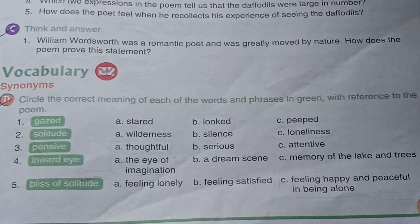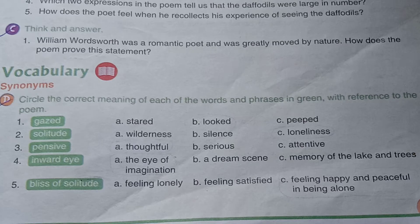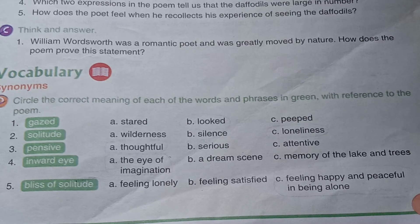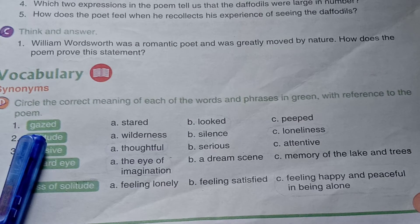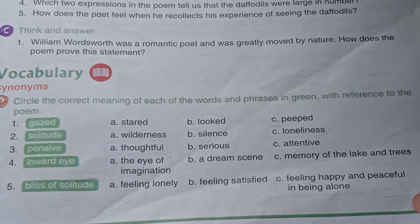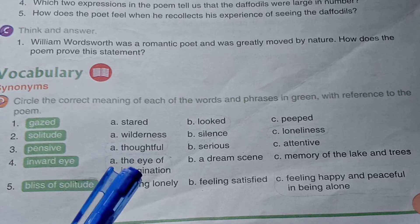You can find exercise D here — Vocabulary. Circle the correct meaning of each of the words. The word is given on your left hand side. For example, number one is 'gazed' and three words are given in front of it.